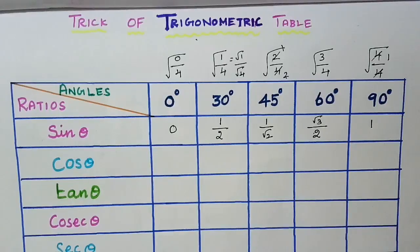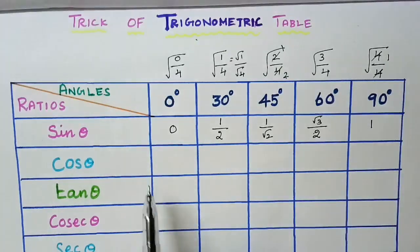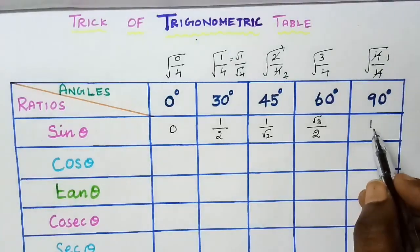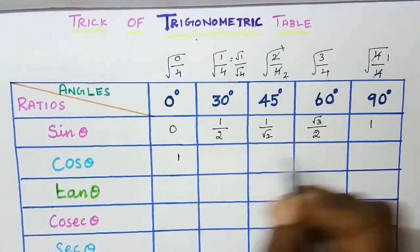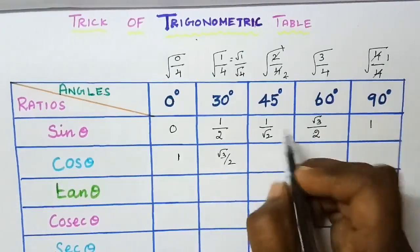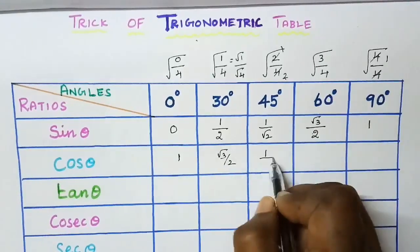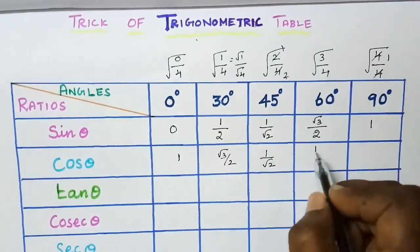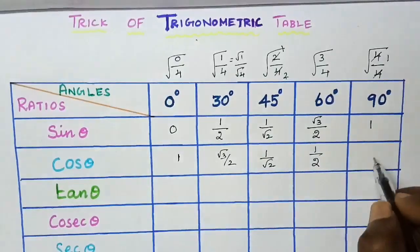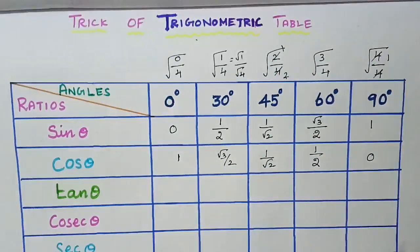Now we have to find out cos theta values. Just write the values of sin theta in reverse order: 1, root 3 by 2, 1 by root 2, 1 by 2, and 0.